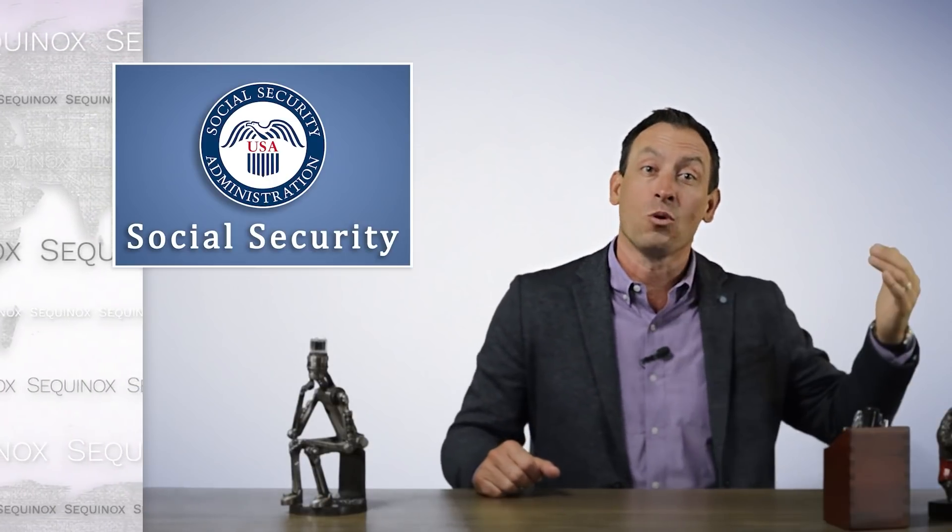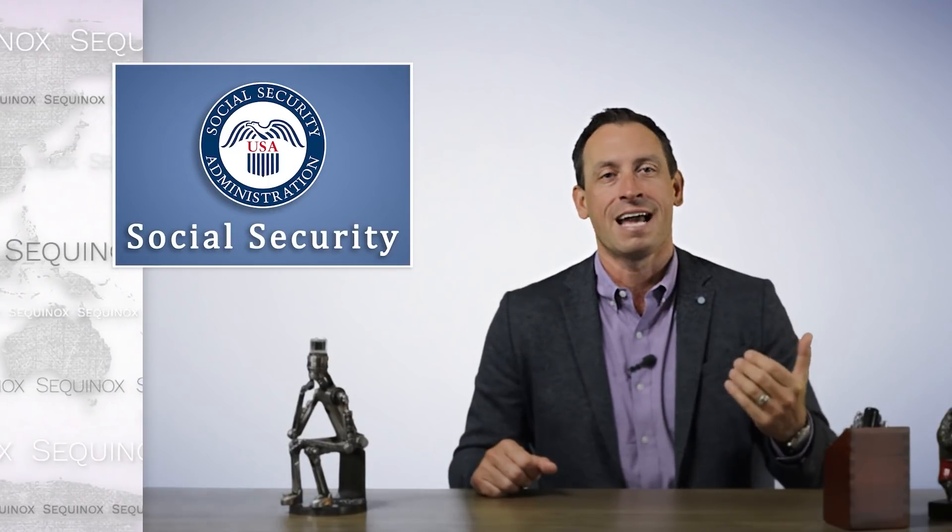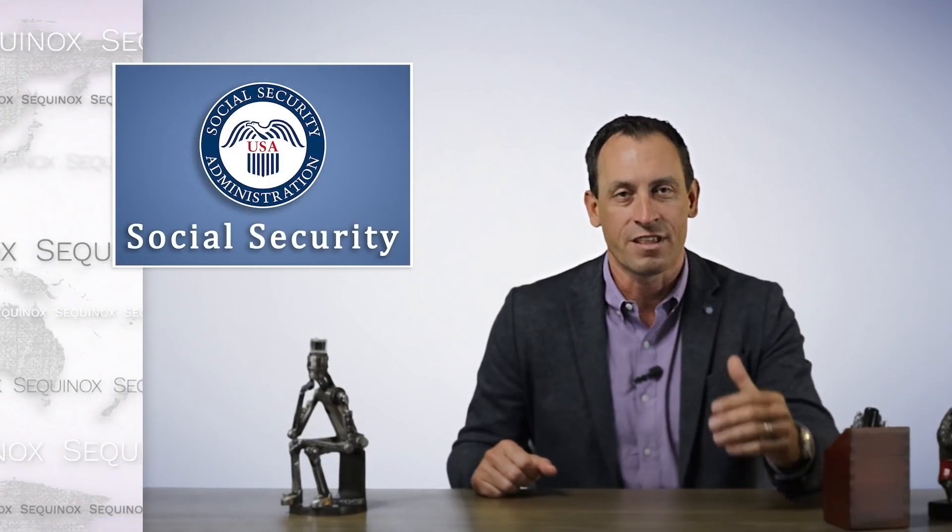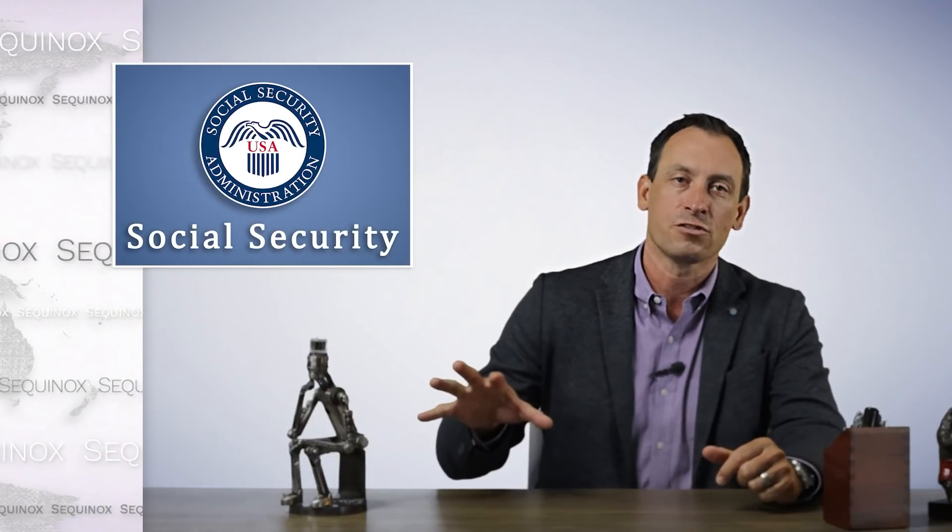What I want you to really take home today is that Social Security is your money. You funded it. This isn't the government's money — every time you were paid, about 6% of your income went into Social Security and your employer matched another 6%. So about 12% of your earnings over your lifetime have gone into the system. That's your money, so make sure you get back as much of it as you can. Don't just take it at 62 — think this through.